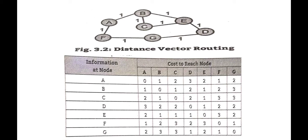In distance vector routing, the least cost route is like a road map or road sign — it shows the path, defines the direction, and based on the distance or kilometers mentioned, you know the shortest path to take. Just like a road sign map, in distance vector routing the least cost route between any two nodes is the route with minimum distance. That minimum distance preferred path is your shortest path.